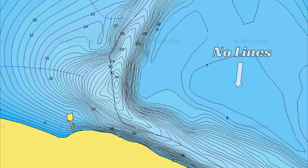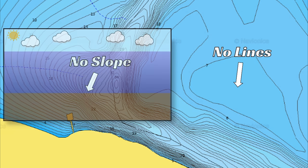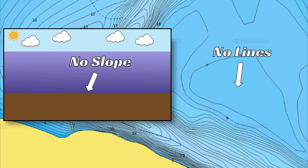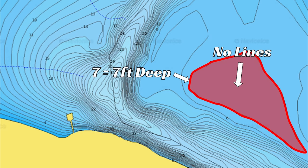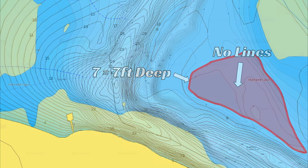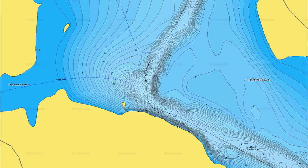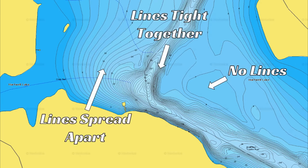Finally, there are areas on the contour map that have no lines. This indicates there is no slope to the bottom of the lake — it is completely flat. Whenever you see an area without contour lines, it means the depth is not changing, and the depth corresponds with the closest contour line around that area. At a higher level you can see the areas where you have no contour lines, tight contour lines, and where the lines are spread apart.